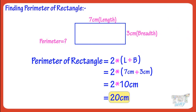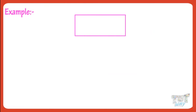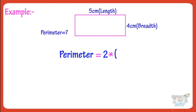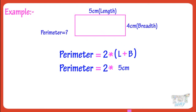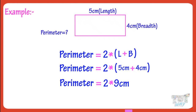Now let's take another example. Here we have another rectangle with its length and breadth mentioned. Length is 5 cm, breadth is 4 cm. We know parameter is 2 multiplied by the sum of length and breadth. Putting the values: parameter equals 2 multiplied by 5 plus 4, equals 2 multiplied by 9. So, parameter equals 18 cm.